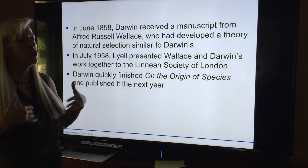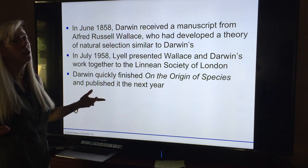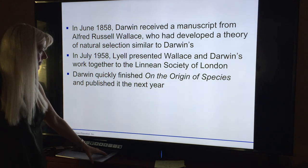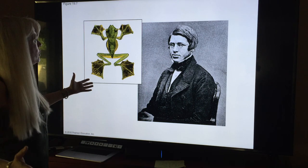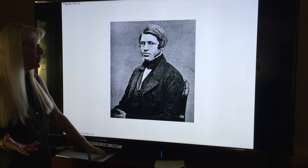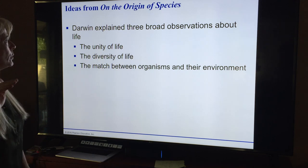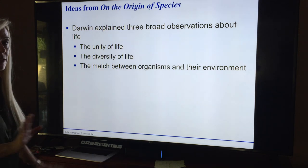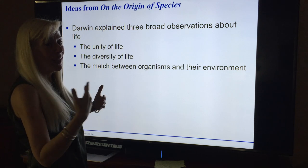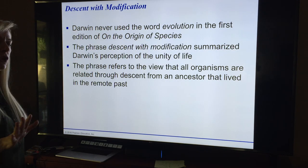Wallace just didn't have as much evidence, so Darwin gets all the credit. When you think of evolution, you think Darwin, not Wallace — 'On the Origin of Species by Means of Natural Selection.' Darwin explained the unity of life, the diversity of life, and the match between organisms and their environment. He never actually used the term 'evolution,' which is kind of strange, since that's what we always associate with him.